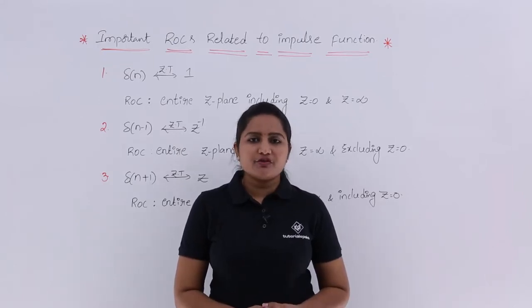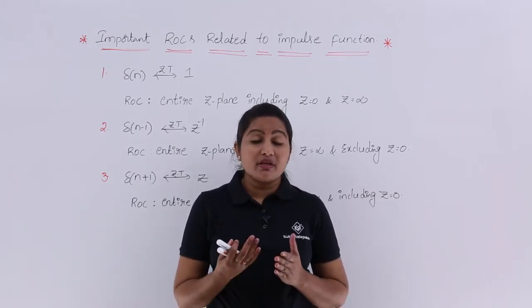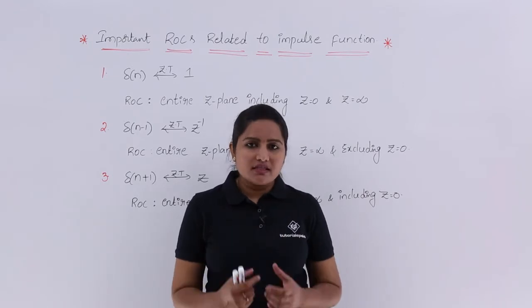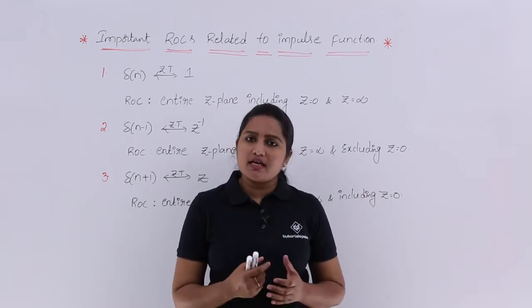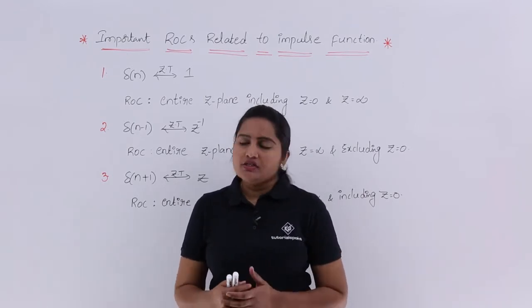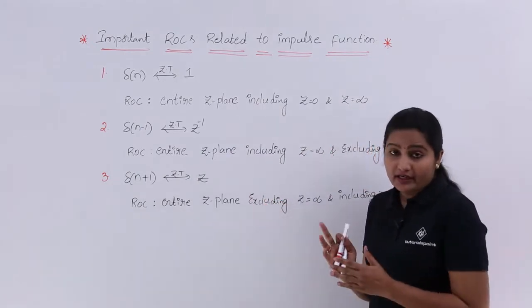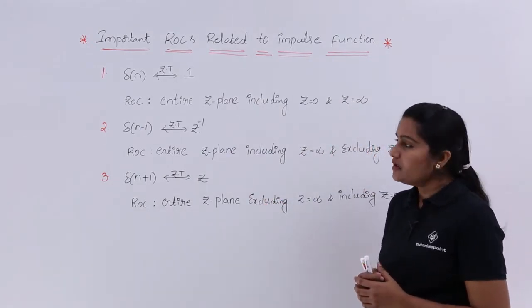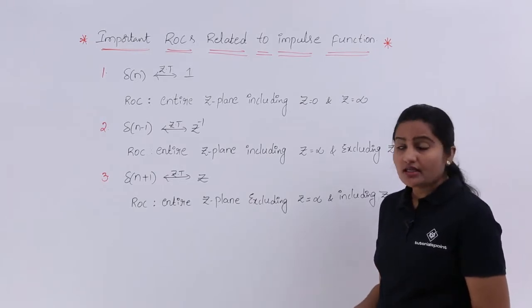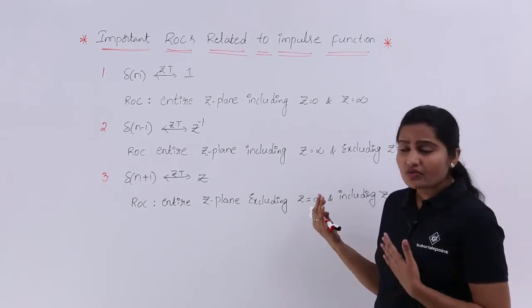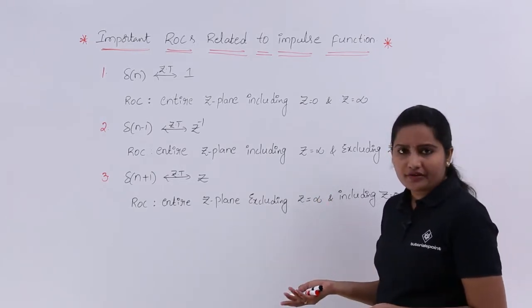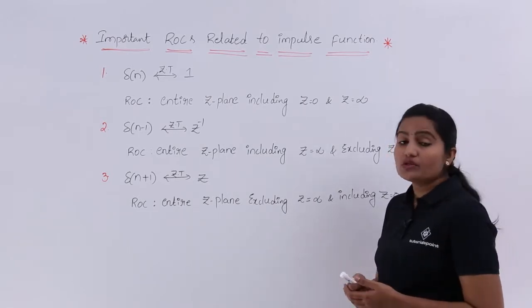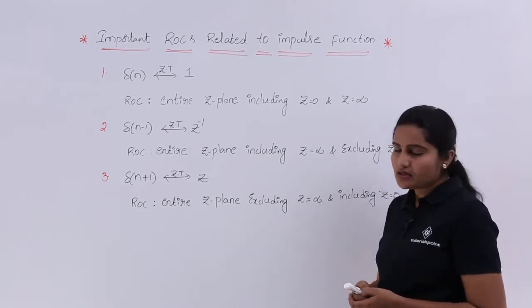In this video we are going to discuss some important ROCs related to impulse function. These ROCs they are asking directly in exams. These 3 are very important ROCs that we need to keep in our mind. When we are writing technical exams they are directly giving: what is the ROC of δ[n], what is the ROC of δ[n-1], and what is the ROC of δ[n+1].